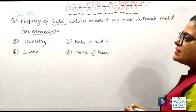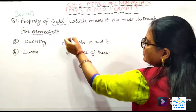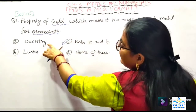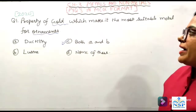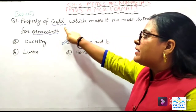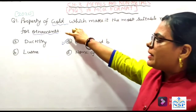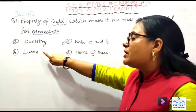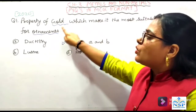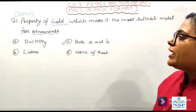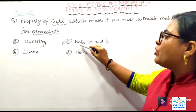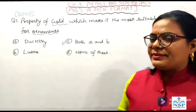The right answer is C because ductility means the ability to be drawn into thin wire. Gold has this property — हम उसको पतली-पतली wire में change कर सकते हैं ornament बनाने के लिए। दूसरा luster का मतलब shine होता है। Gold में सबसे ज़्यादा shining भी होती है और ये ductility भी रखता है, इसलिए both A and B are correct.